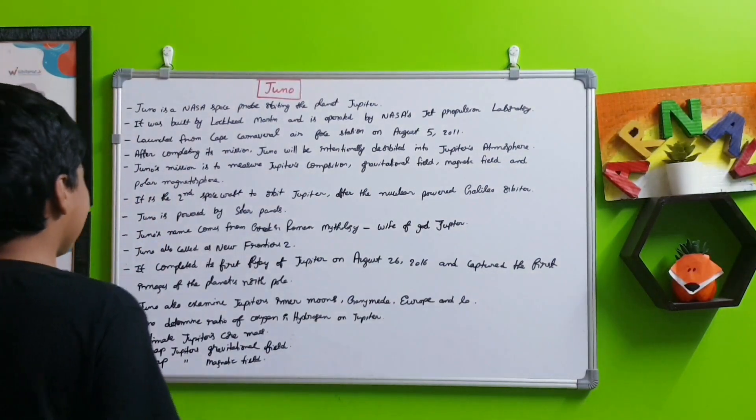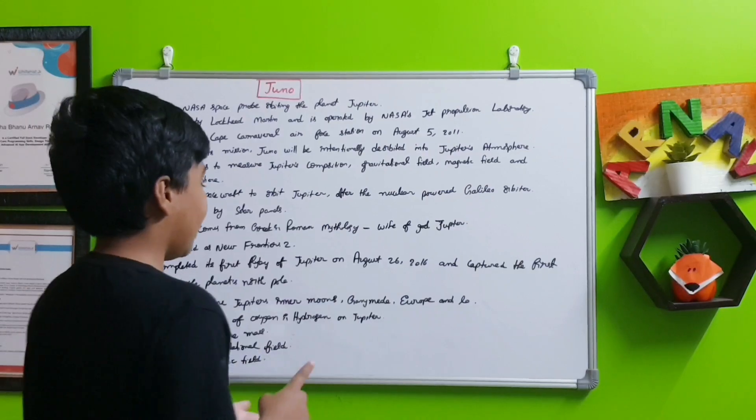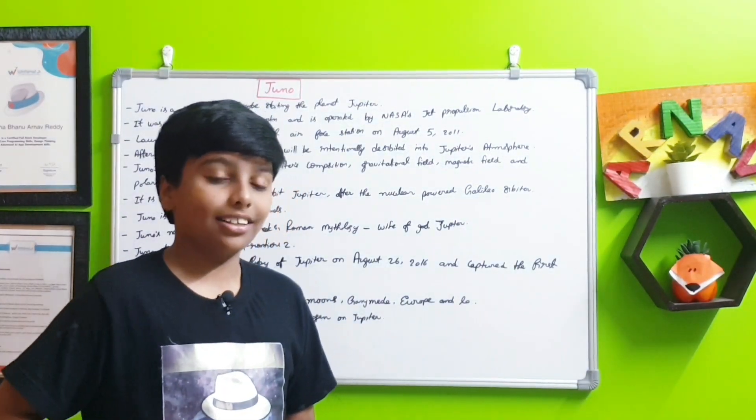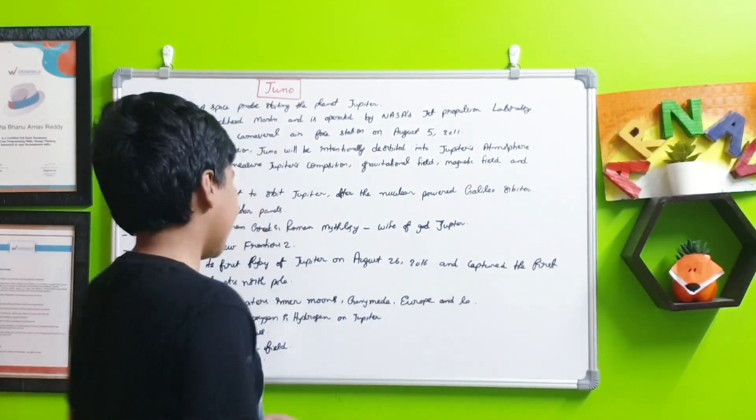The main missions that Juno needs to do: First, Juno needs to determine the ratio of oxygen and hydrogen on Jupiter, like hydrogen is this much on Jupiter and oxygen is this much on Jupiter.